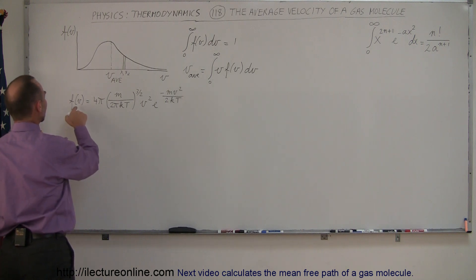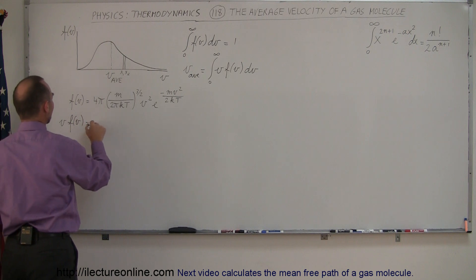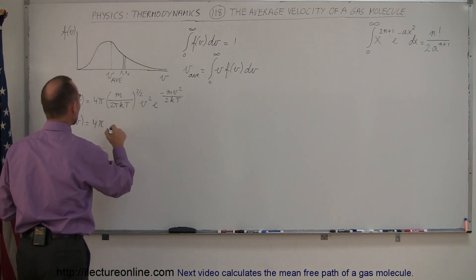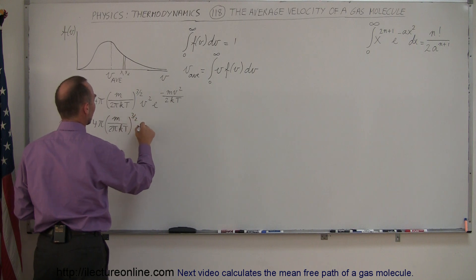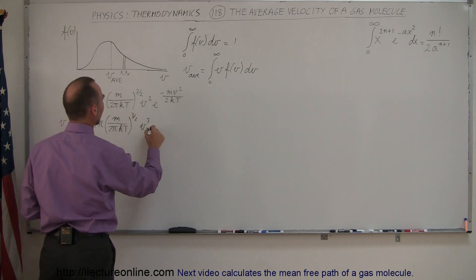So we're going to multiply this times V. V times f(V) is equal to the very same equation, simply by this becoming V cubed. So we have M divided by 2πKT to the 3 halves power, V cubed instead of V squared, e to the minus MV squared divided by 2KT.